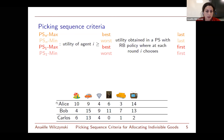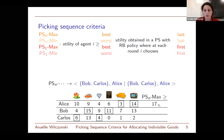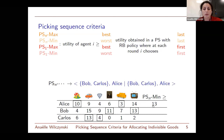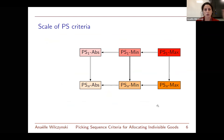We define new criteria based on picking sequences. The PSn-max criterion says every agent should get a utility of at least the best utility obtained in a picking sequence with a recursively balanced policy where the agent always chooses last in each round. The reverse, PS1-min, is the worst utility when the agent chooses first every time. For example with PSn-max, a minimal requirement might be 17; with PSn-min, the requirement might be 30.